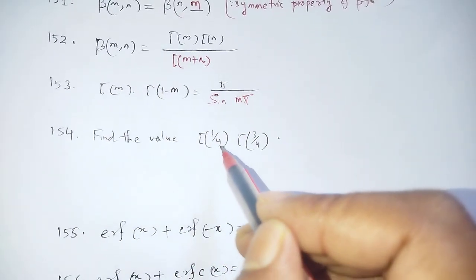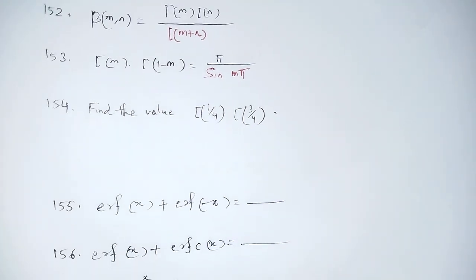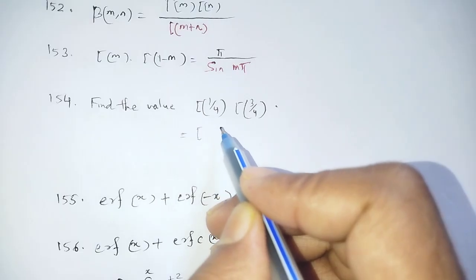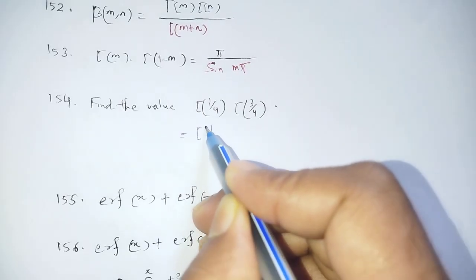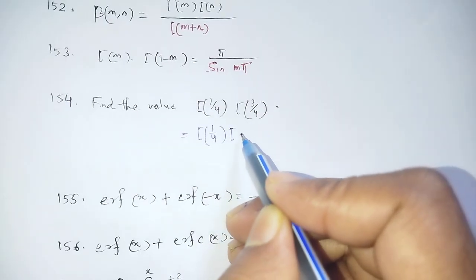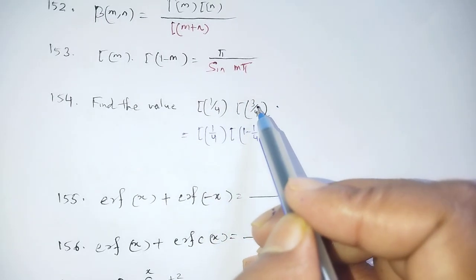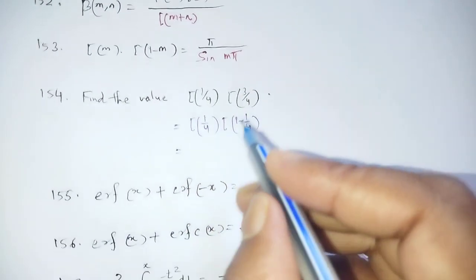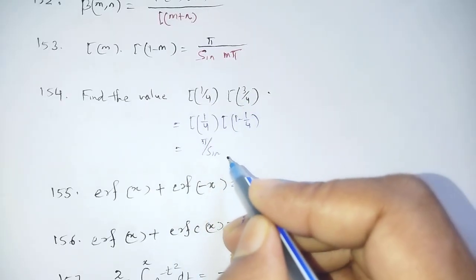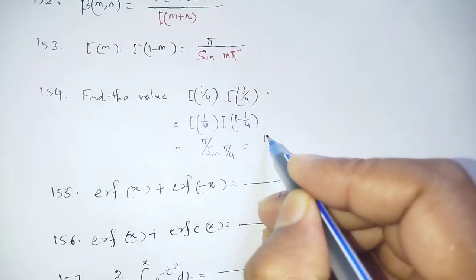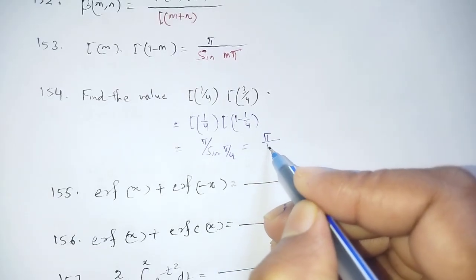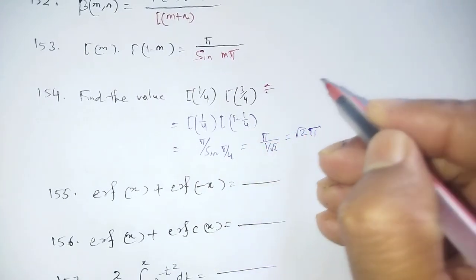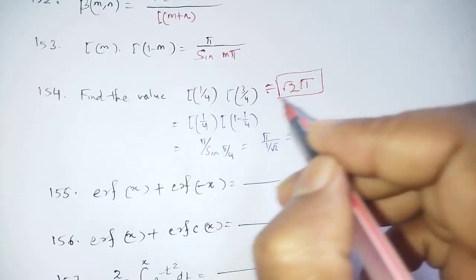Find the value of Γ(1/4)·Γ(3/4). Since 3/4 = 1 - 1/4, we use the formula Γ(m)·Γ(1-m) = π/sin(mπ) with m = 1/4: Γ(1/4)·Γ(3/4) = π/sin(π/4) = π/(1/√2) = √2·π.